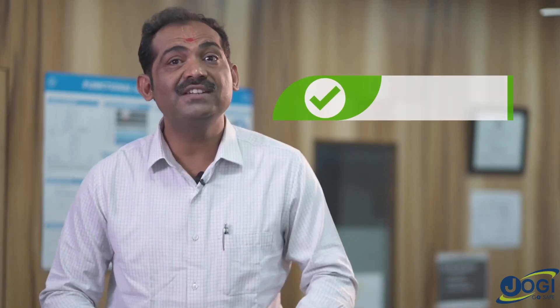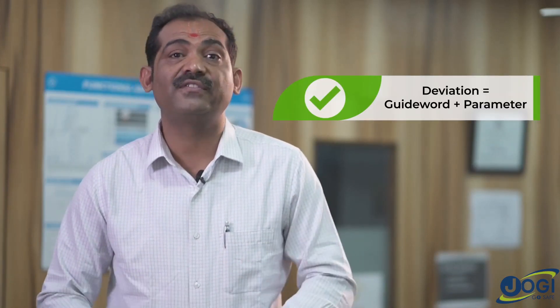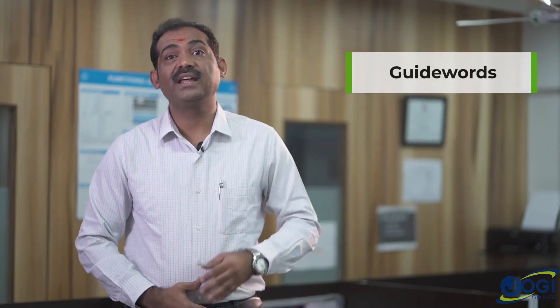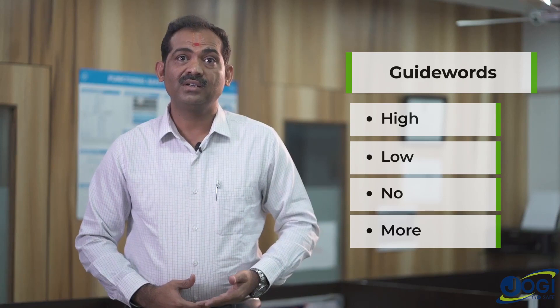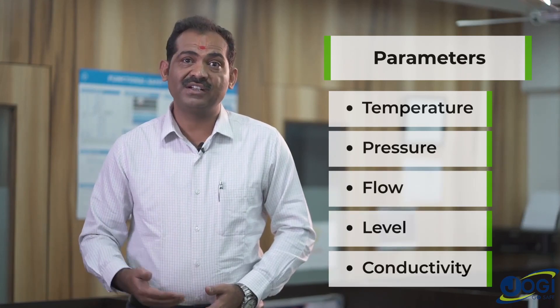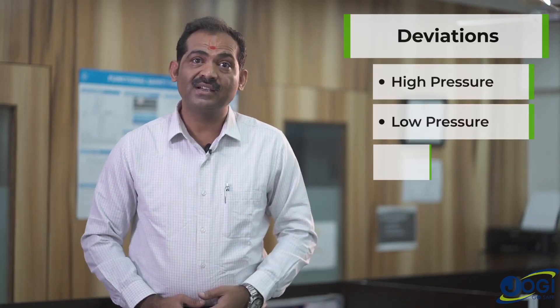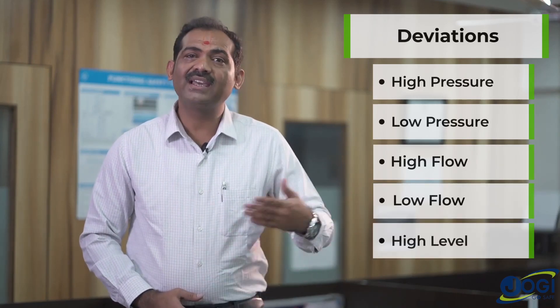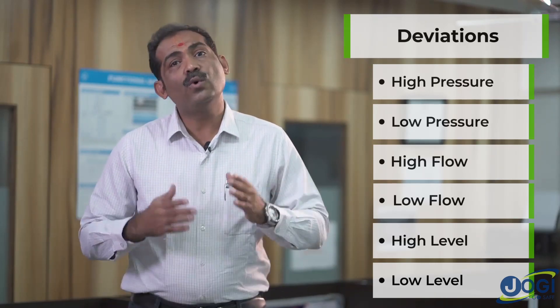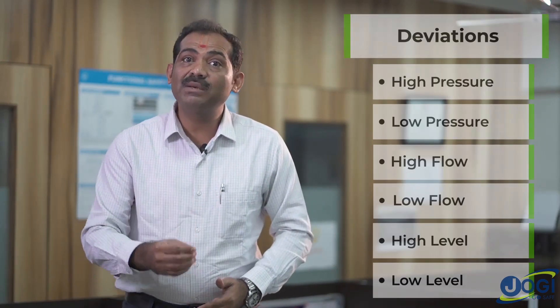HAZOP is conducted node by node. For each node we identify all applicable process deviations. A deviation is the combination of a guide word and a process parameter. Guide words include high, low, no, more, etc., and process parameters include temperature, pressure, flow, level, conductivity, pH, and so on. By combining these, we identify deviations such as high pressure, low pressure, high flow, low flow, high level, low level, and so forth.